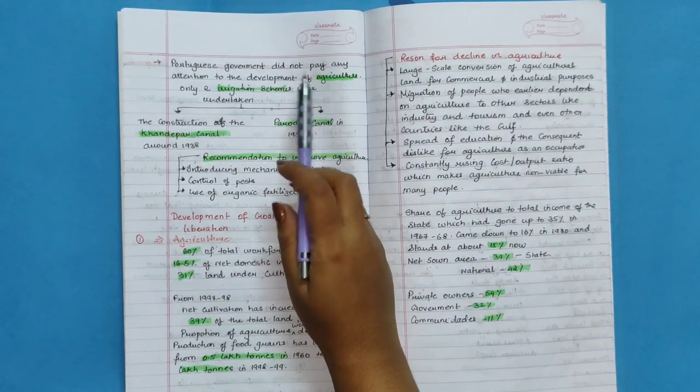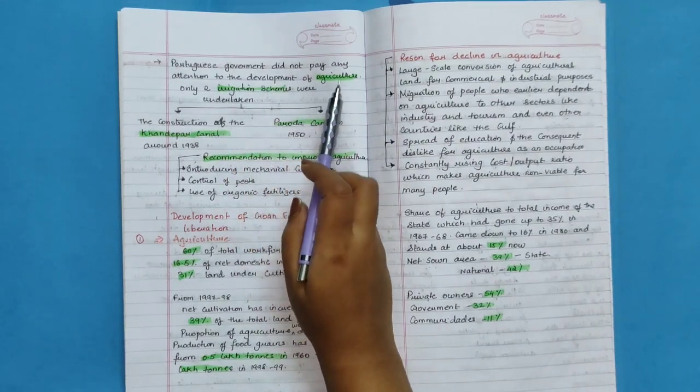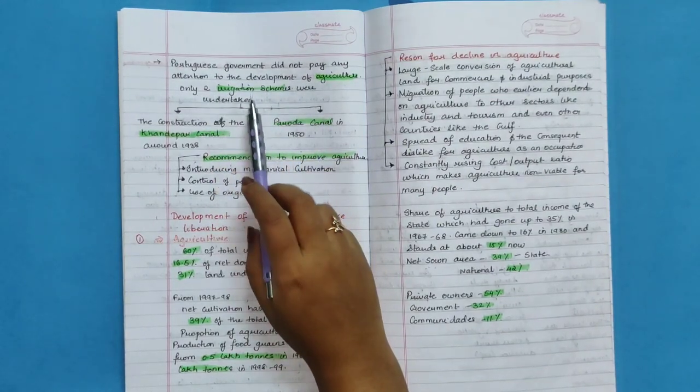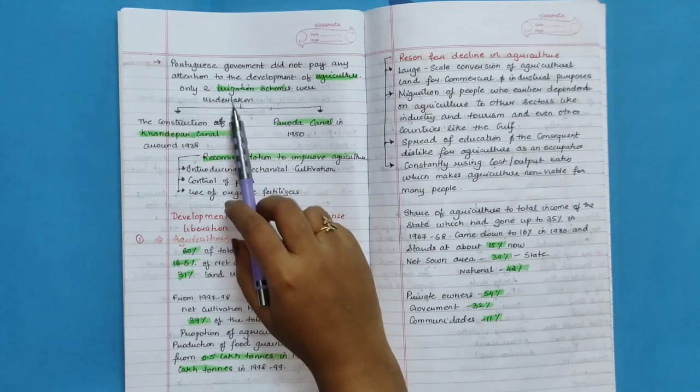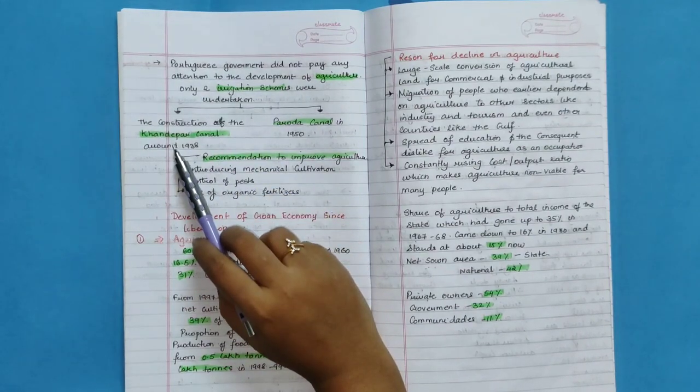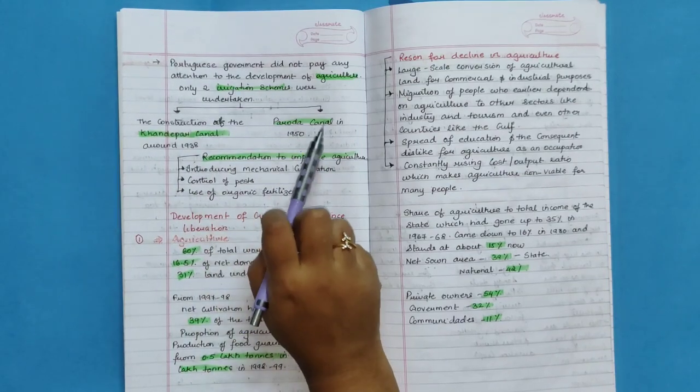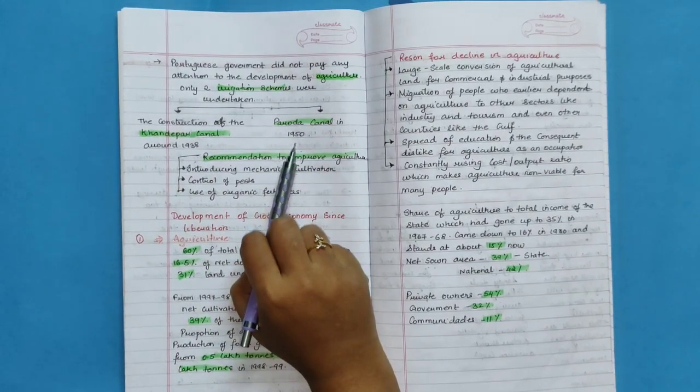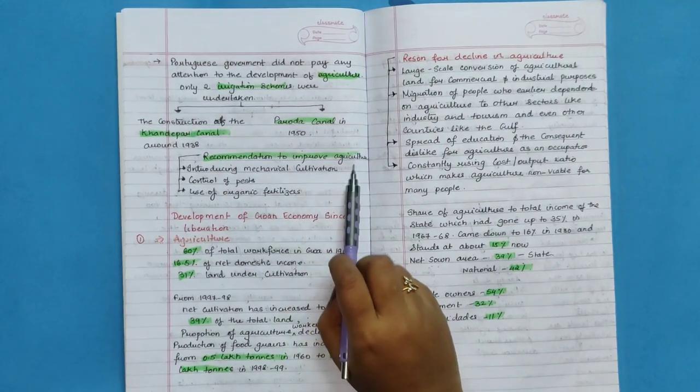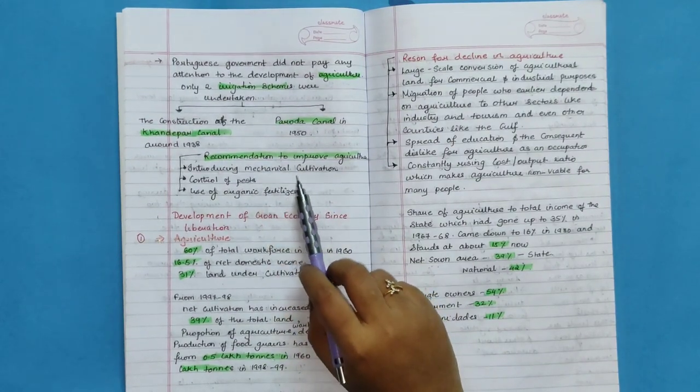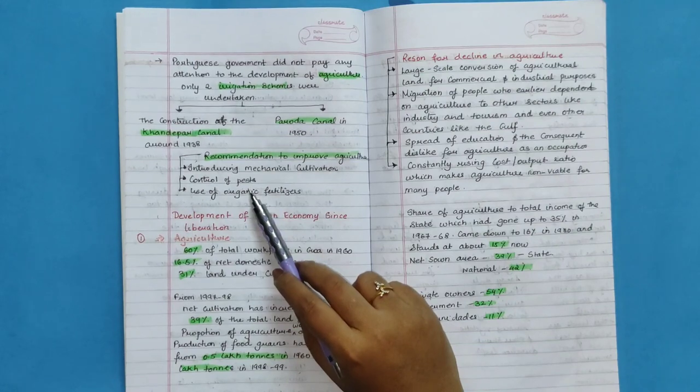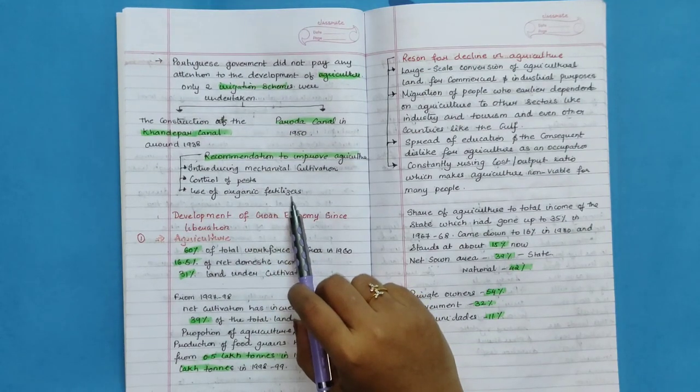Investment in this was less as seasonal employment contributed only 7% of state's income. Portuguese government did not pay any attention to the development of agriculture. Only two irrigation schemes were undertaken: the construction of the Khandapar Canal around 1938 and Paroda Canal in 1950. Recommendations to improve agriculture: Introducing mechanical cultivation, control of pests, use of organic fertilizers.